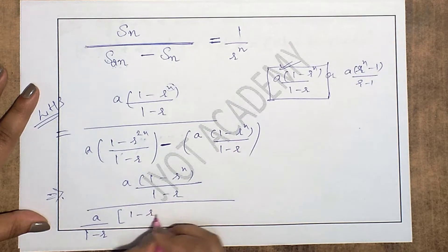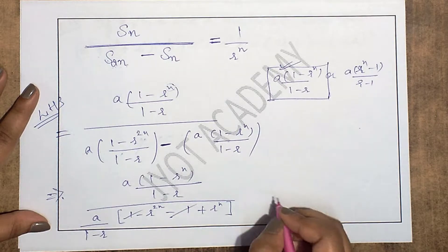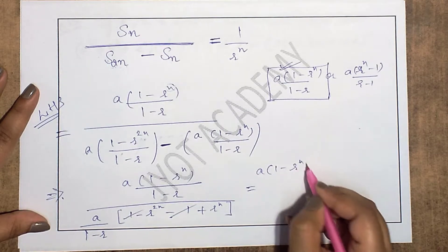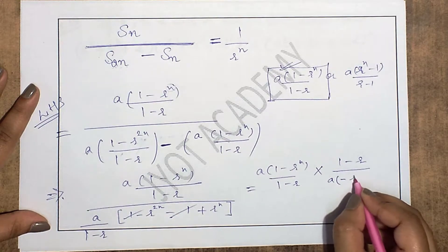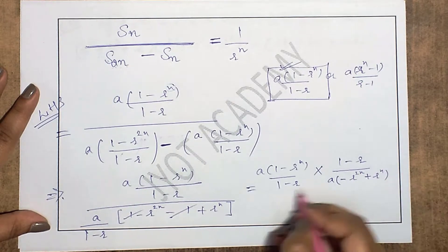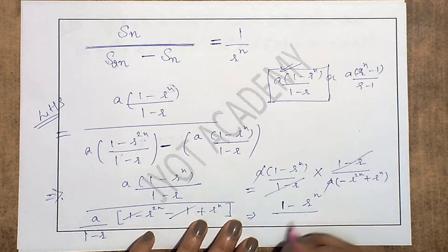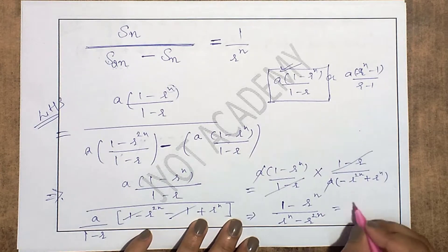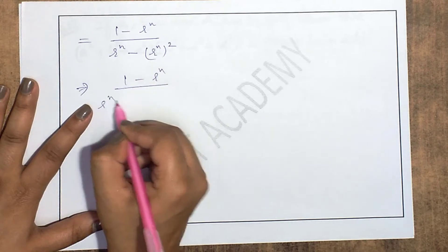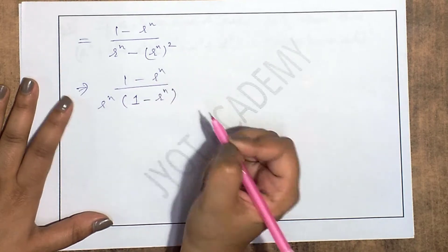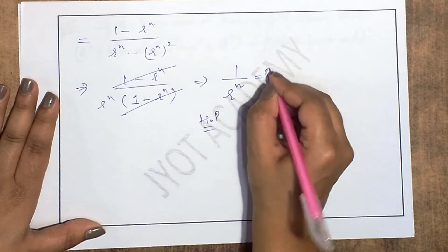Working out S_n / (S_(2n) − S_n): the a/(1−r) terms cancel. The numerator becomes (1 − r^n) and the denominator becomes (1 − r^(2n)) − (1 − r^n) = r^n − r^(2n) = r^n(1 − r^n). The (1 − r^n) cancels from numerator and denominator, leaving 1/r^n. Hence proved.